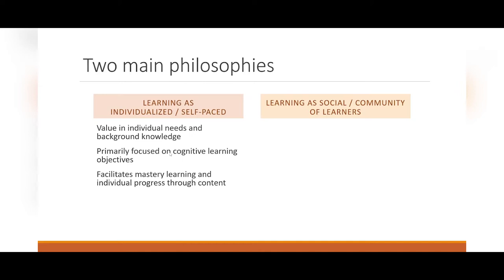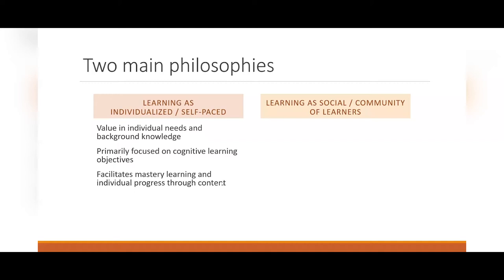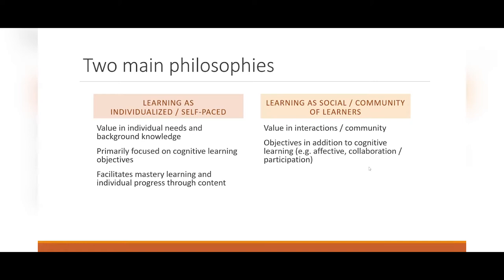Individualized learning has a time and a place. This approach places more emphasis on an individual's needs and background knowledge; it's primarily focused on cognitive learning — especially learning facts — and emphasizes mastery learning and individual progress through content. Social learning places more emphasis on having interactions and learning as a community. You may have cognitive objectives — like learning facts or reasoning — but you may also have affective objectives, or want students to collaborate, engage in participation, or demonstrate something.